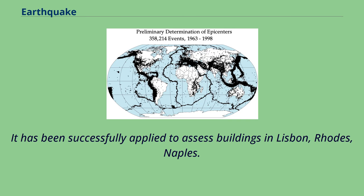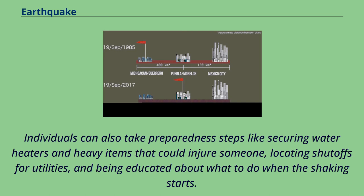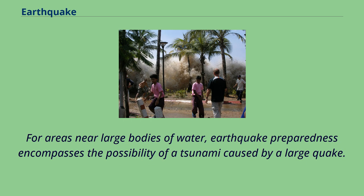The Igor system has been successfully applied to assess buildings in Lisbon, Rhodes, and Naples. Individuals can also take preparedness steps like securing water heaters and heavy items that could injure someone, locating shutoffs for utilities, and being educated about what to do when the shaking starts. For areas near large bodies of water, earthquake preparedness encompasses the possibility of a tsunami caused by a large quake.